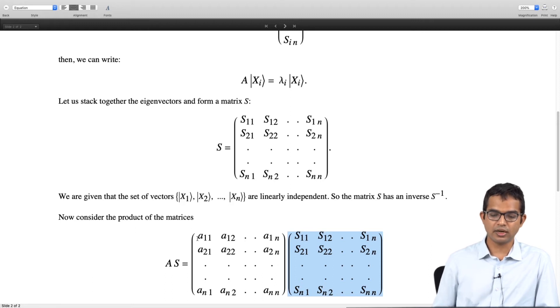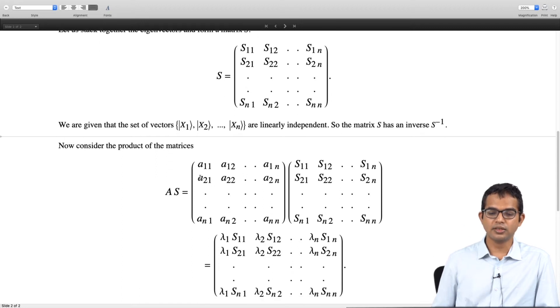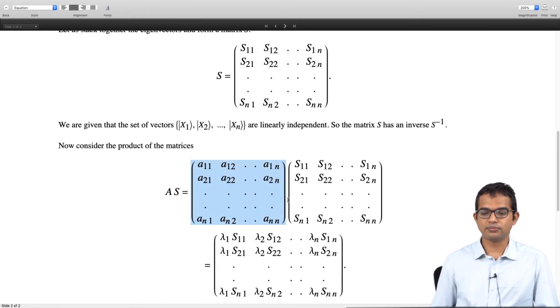So, we can look at the product of these two matrices and then we see that in fact this product is something that we can work out in a straightforward way because what is the effect of multiplying this matrix with the first column vector. If I look at this column vector it is really A acting on x1.